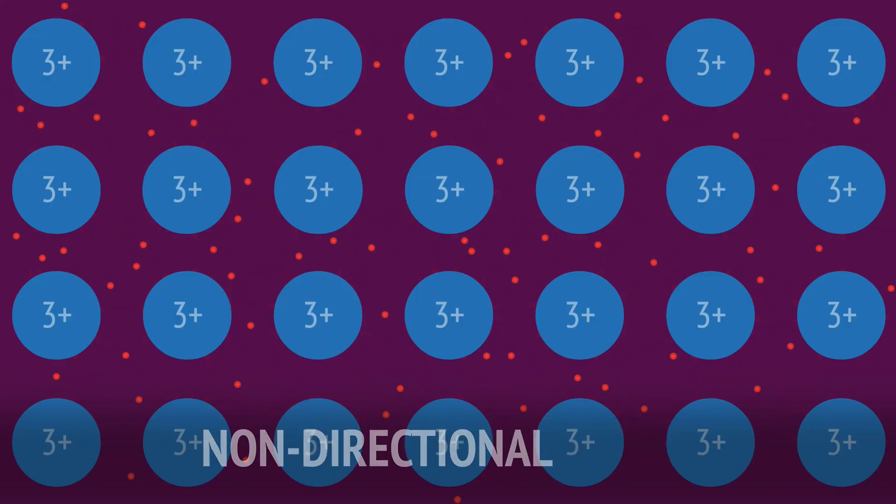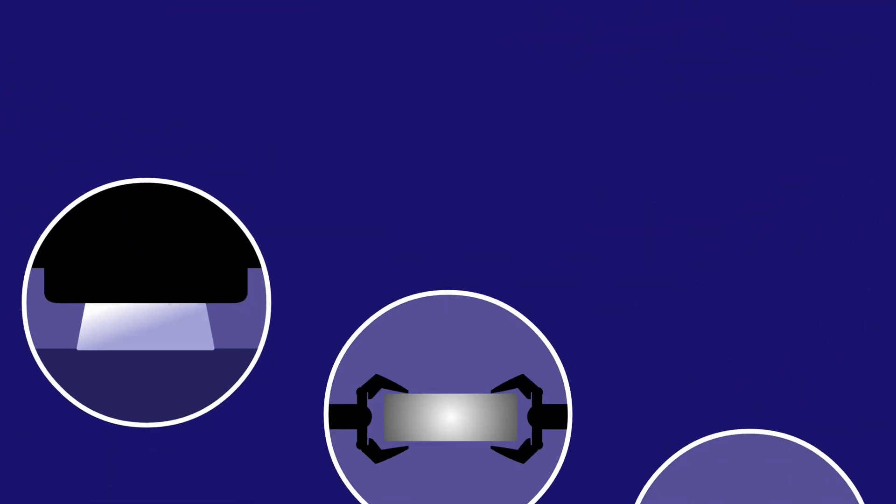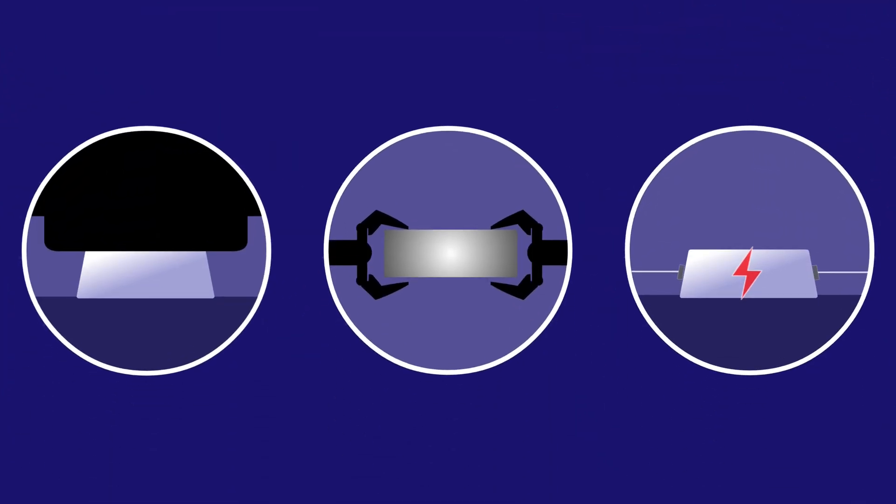These bonds are non-directional because electrons are shared with all neighbouring atoms in all directions. This unique structure and bonding explains the special physical properties of metals.